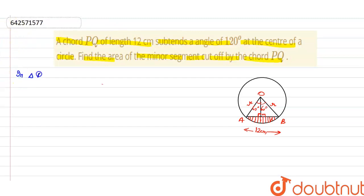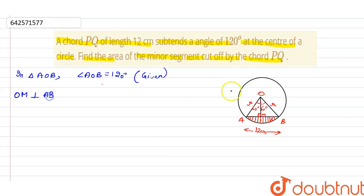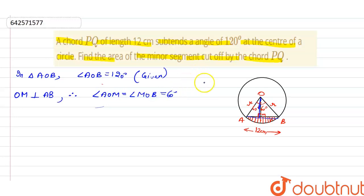According to our question, in triangle AOB, angle AOB is equal to 120 degrees — this is given. Let OM be perpendicular to AB. Therefore, angle AOM equals angle MOB equals 60 degrees, and MA equals MB.